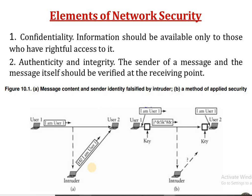Confidentiality means the information should be available only to those who have the right to access it — only those with permission can get the information. The second element is authenticity and integrity: the sender of the message and the message itself should be verified at the receiving point. Whenever a message is received, you need to check whether it is a valid message and whether it was sent from a valid user.